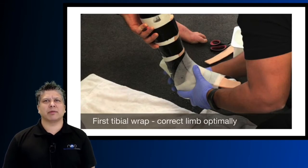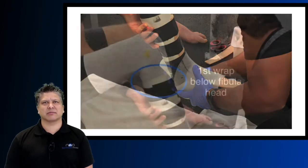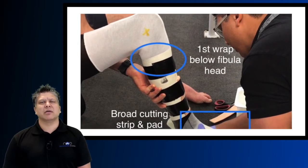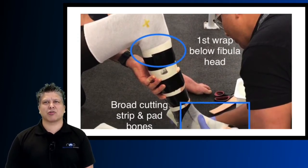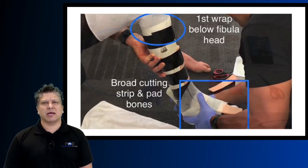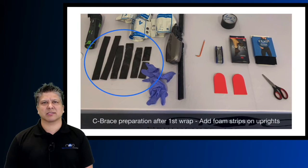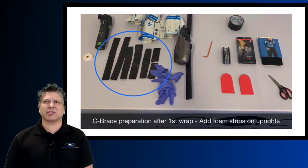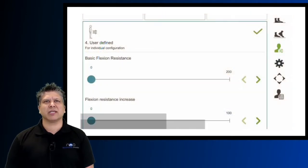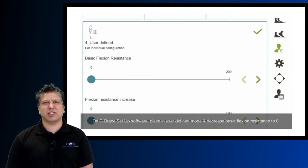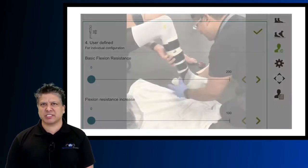For your first tibial wrap, correct the limb optimally as you would in any below-knee AFO cast. The first wrap must start approximately one inch below the fibular head. Place a broad cutting strip across the ankle dorsum and pad any bony prominences susceptible to pressure. Prior to your first wrap, on your C-Brace setup software place it in user-defined and decrease your basic flexion resistance to zero.